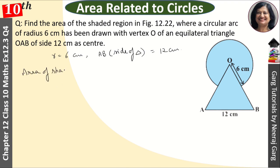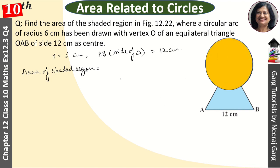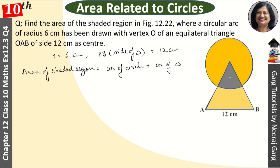Let us explain the area of the shaded region. Think about what you will do in this area — think quickly and tell us in the comment section. This is our circle, so this is the area of circle. This is our triangle, this is the area of triangle. Now, there is an overlapping portion — we will minus this because it is overlapping. So, minus the area of the sector.